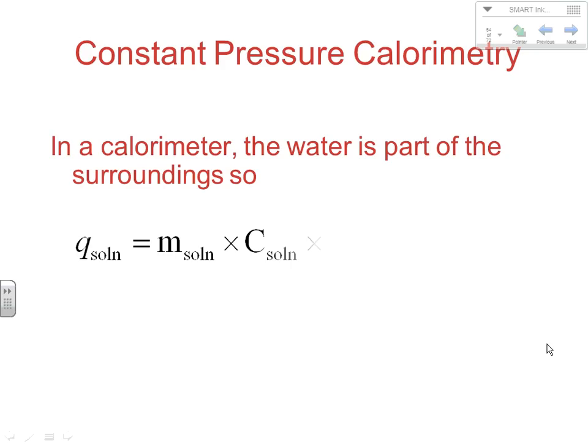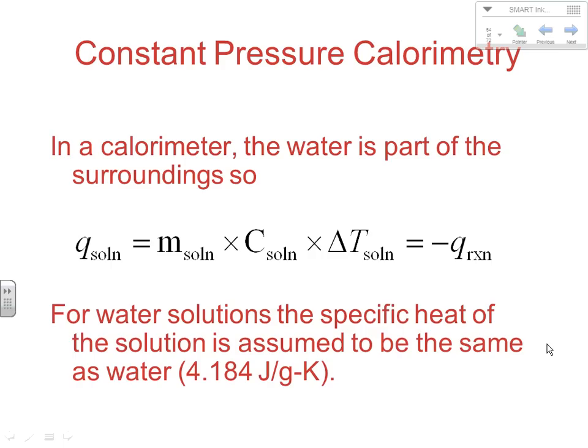Because the specific heat of water is well known — the 4.184 we saw before — we can measure delta H for the reaction using Q = mcΔT. In a calorimeter, the water is part of the surroundings, so the Q of the solution equals the negative of the Q of the reaction. When we plug in values — mass of the solution times specific heat of the solution times the temperature change — we calculate Q of the solution; to find the reaction's Q, we multiply by negative one. For water solutions, the specific heat of the solution is assumed to be the same as water: 4.184.